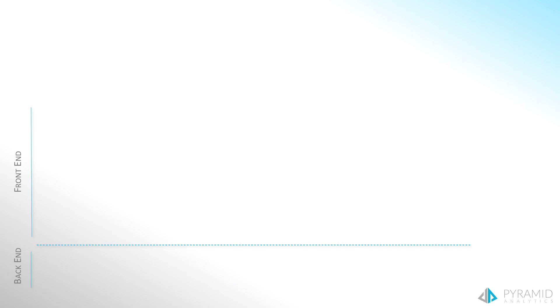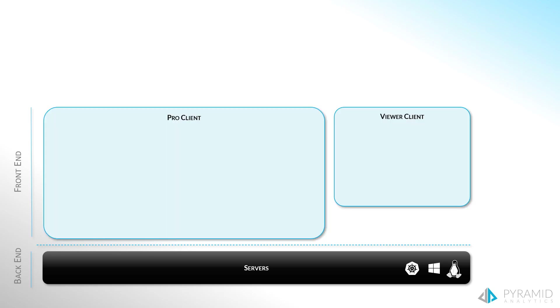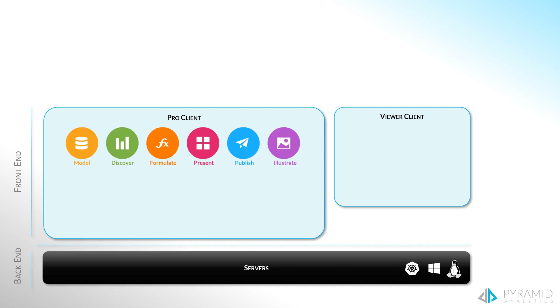First, Pyramid is installed on servers on the back end and is a server-based web application. Then to use Pyramid on the front end, users are given access to either a professional client or a viewer client. The pro client includes several modules or apps, which give users tools to build analytical content and reports, starting in some cases from raw data all the way through to visualizations, and ending with slick dashboards and reports.